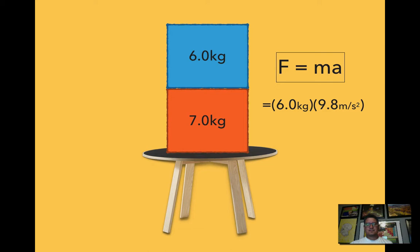Our mass is 6 kilograms for the top box, and then our acceleration is 9.8 meters per second squared because that's the force of gravity, that's the pull that earth has on all objects. And we come to 58.8 Newtons.